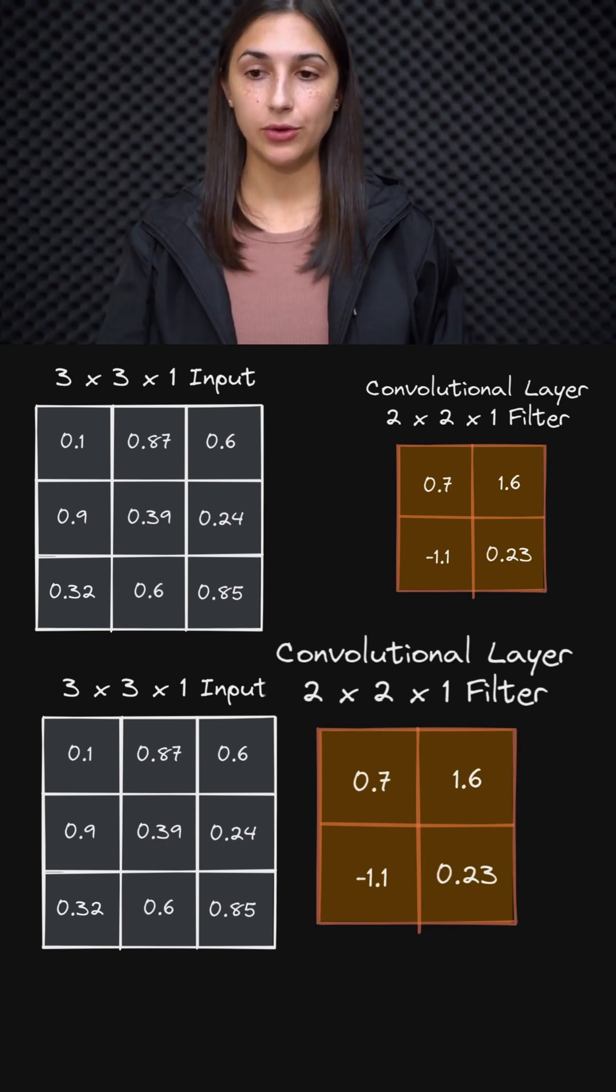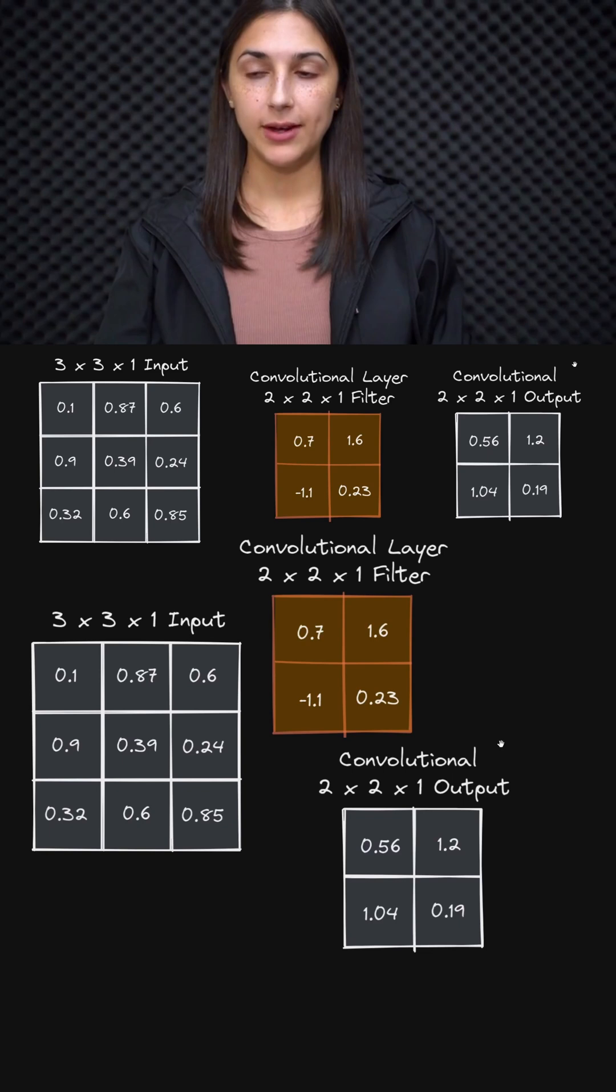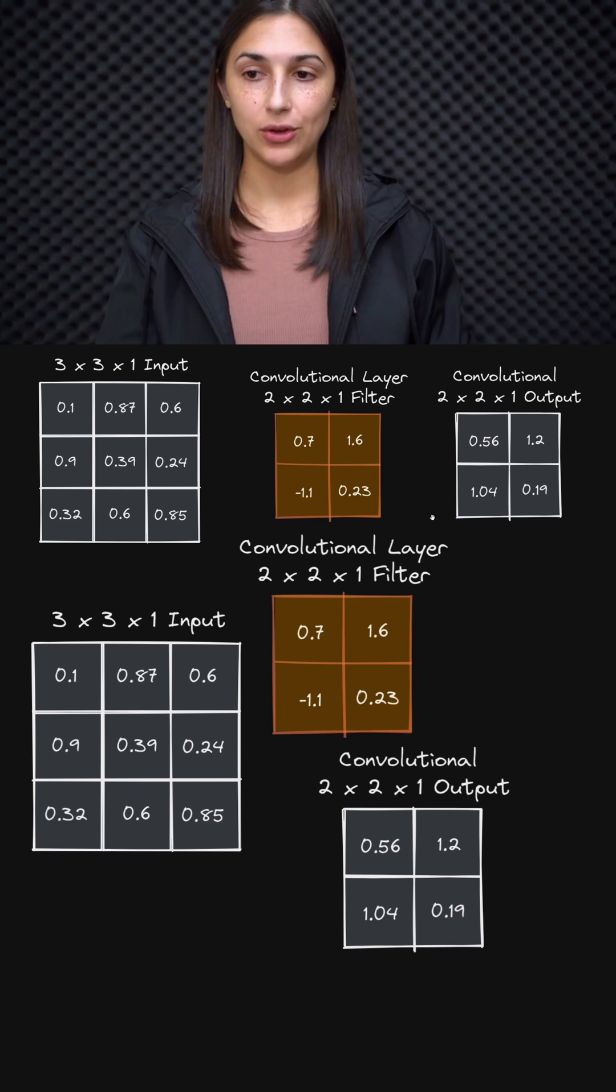At this point, since we're so familiar with the convolution operation, we scroll down. We should be very familiar with how this 2x2 filter will convolve this 3x3 input to result in this 2x2 output.